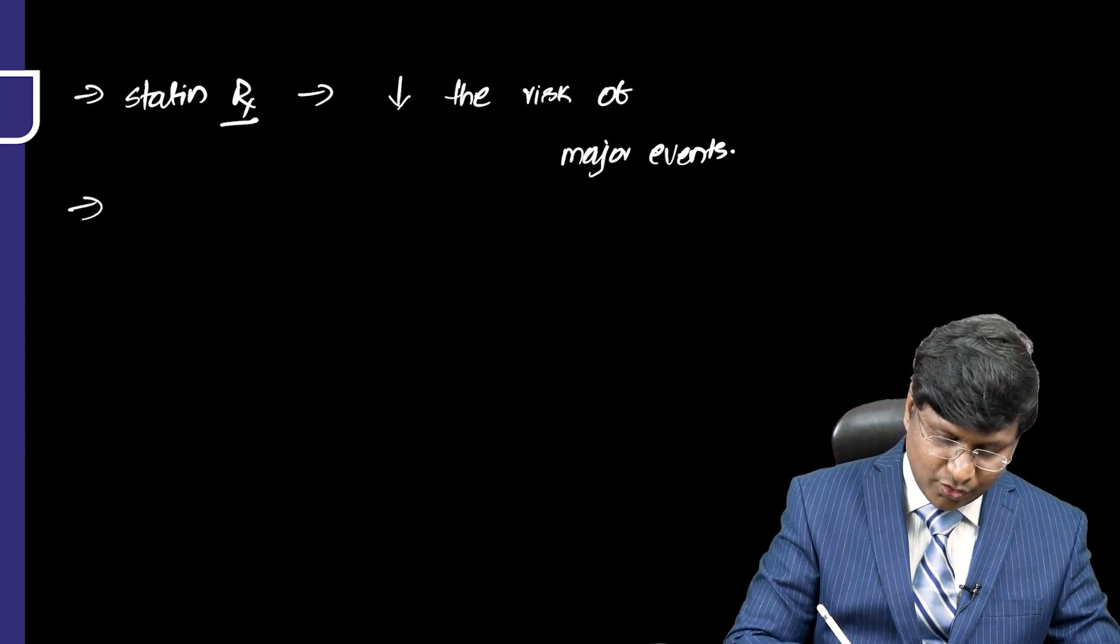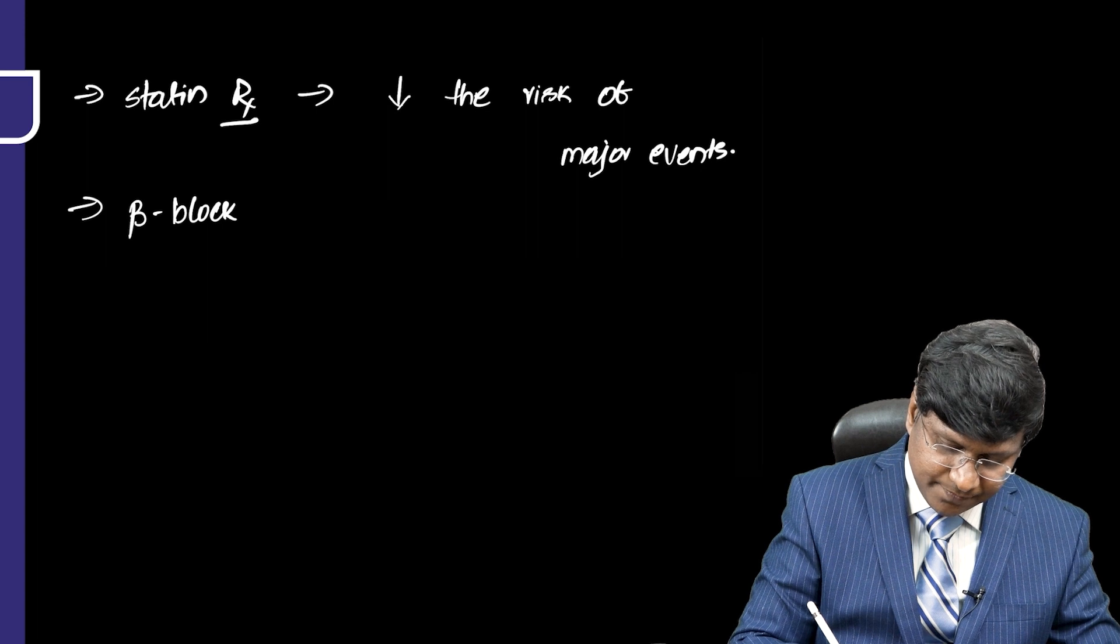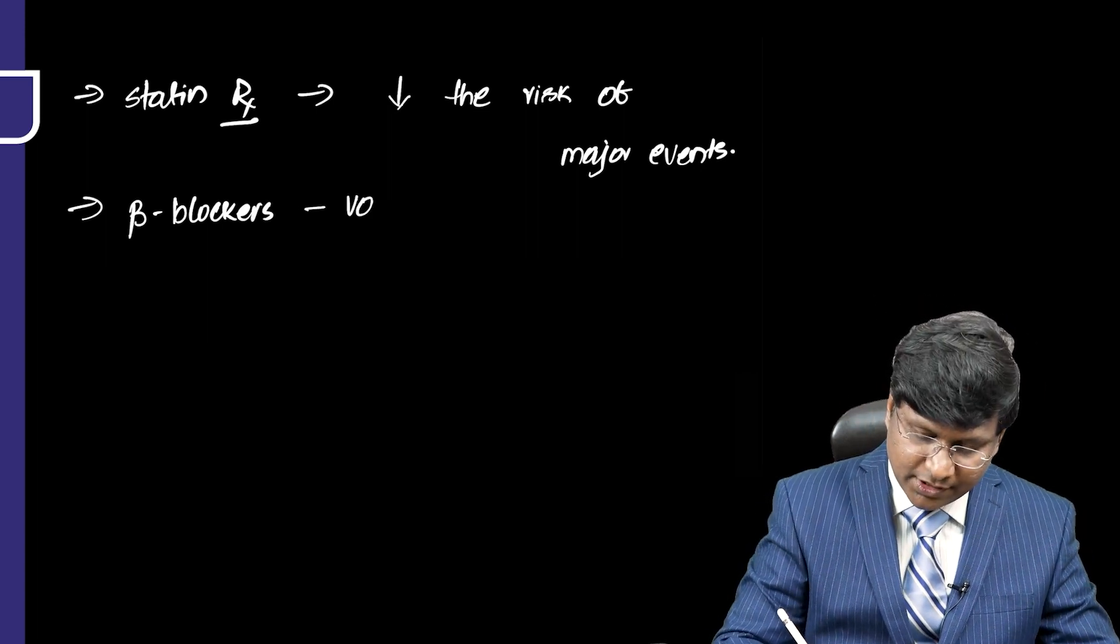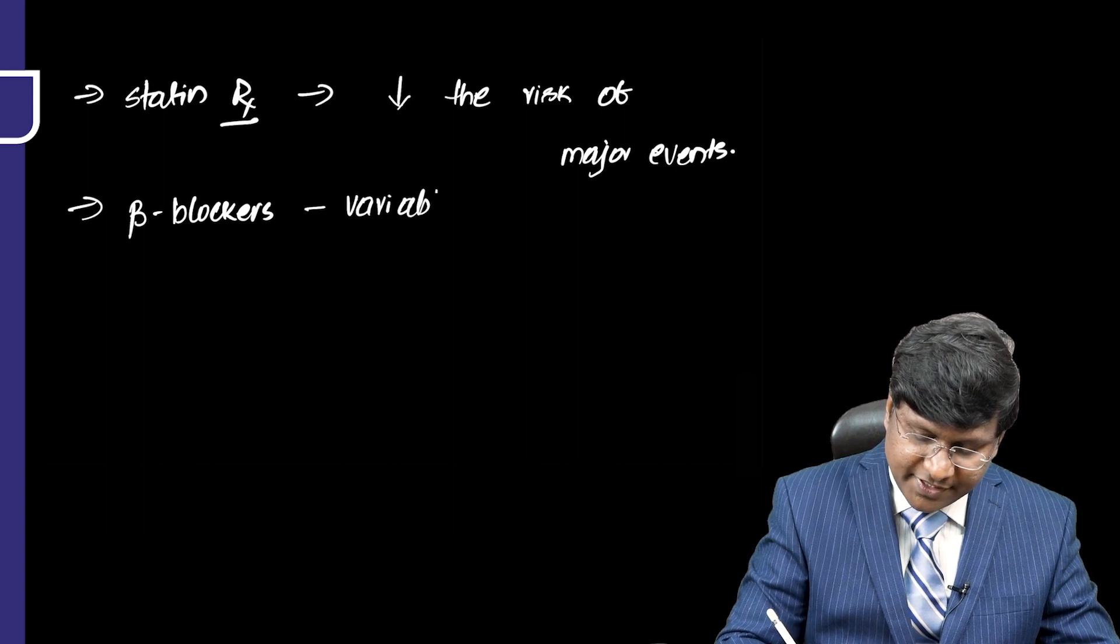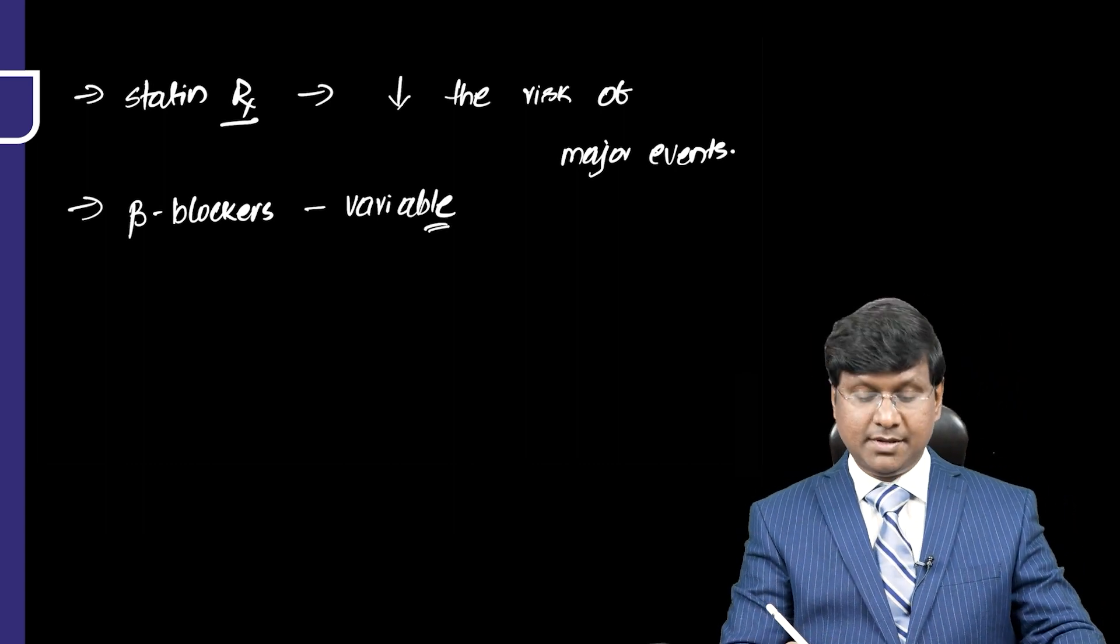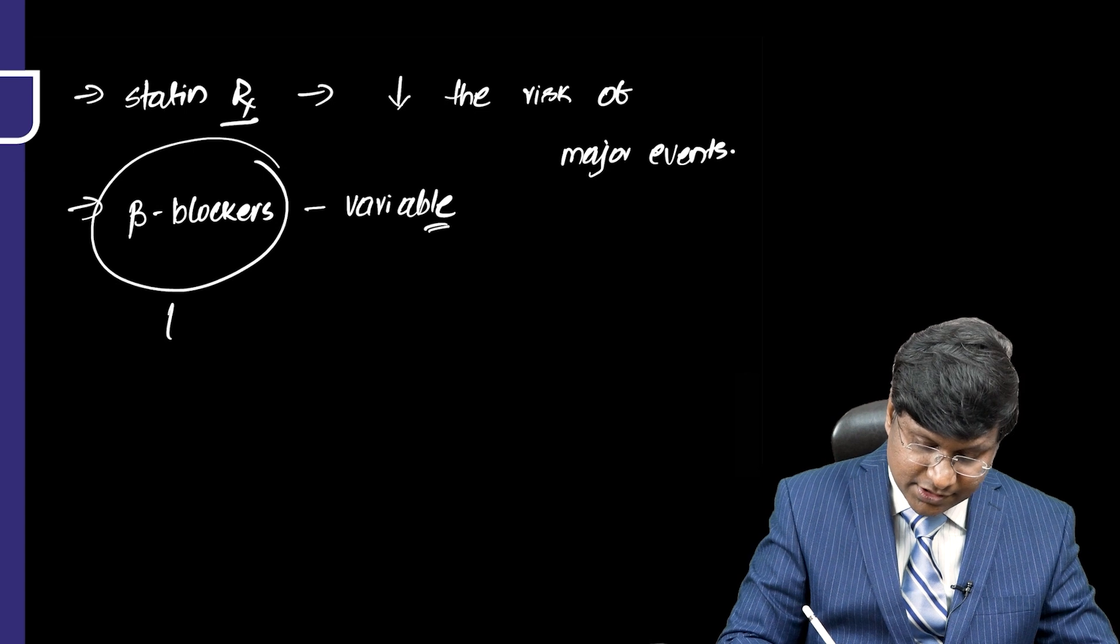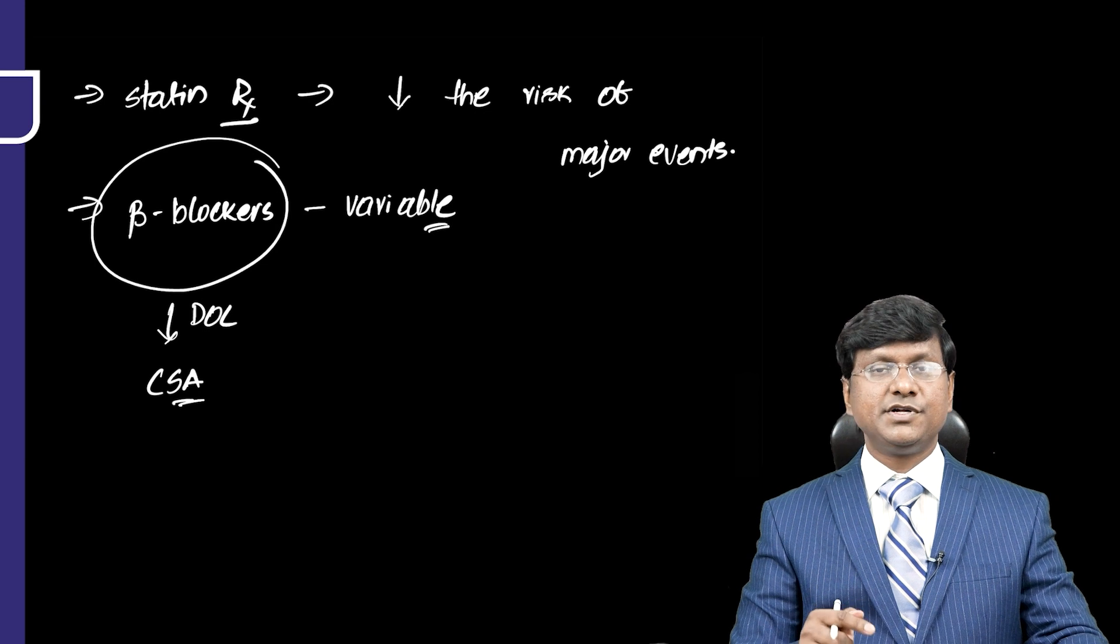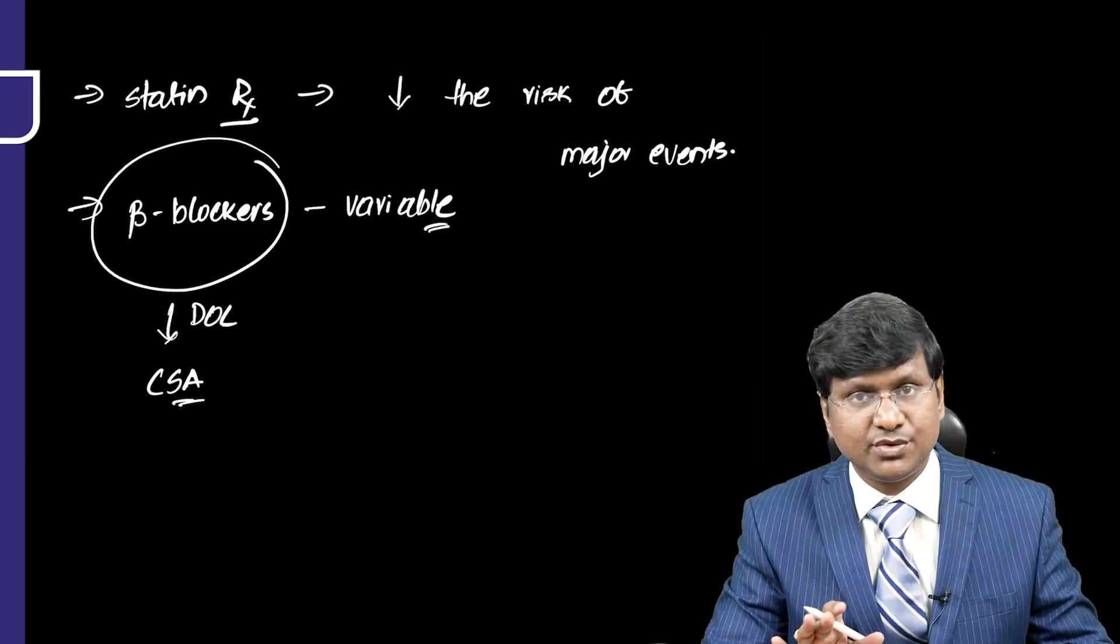And the other group of drugs are the beta blockers. If you take the beta blockers, the response to the beta blockers in case of the Prinzmetal angina is variable. Whereas if you take beta blockers, they are considered as the drug of choice in patients with chronic stable angina. But response in case of Prinzmetal angina is variable.